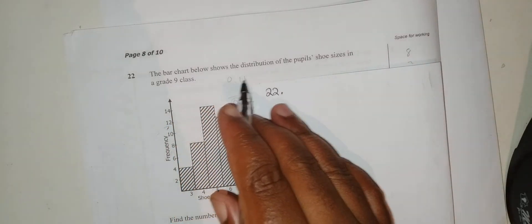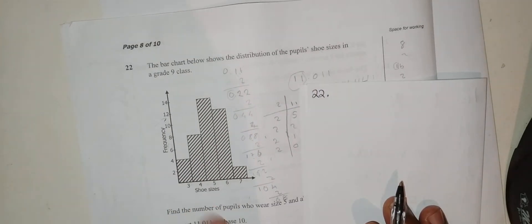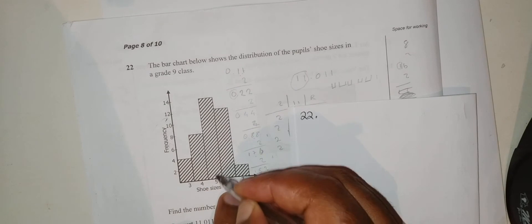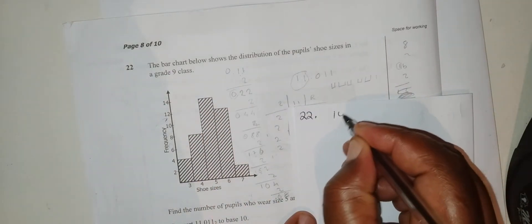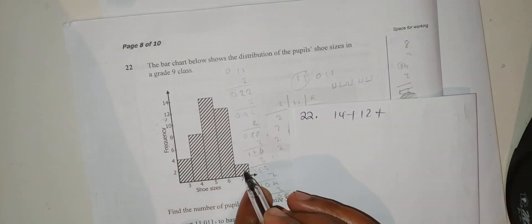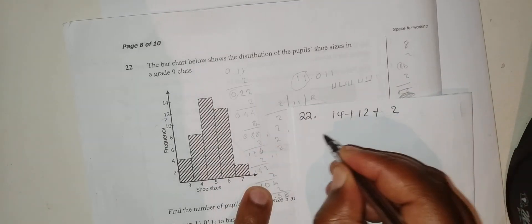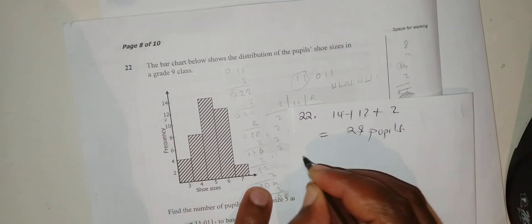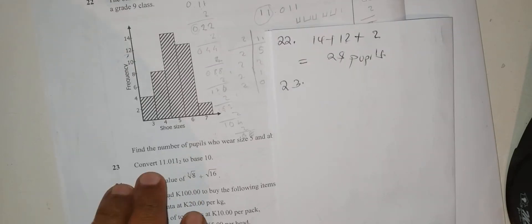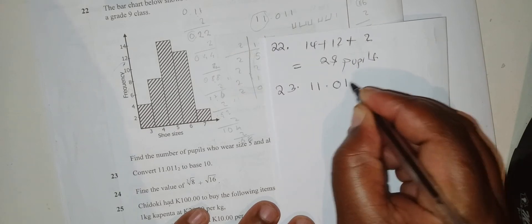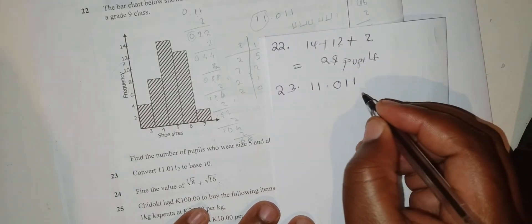Question 22: The bar chart below shows the distribution of pupils' shoe sizes in a grade 9 class. Find the number of pupils who wear size 5 and above. Those that wear size 5 are 14, plus those that wear size 6 are 12, plus those that wear size 7 are 2. 14 plus 14 is 28 pupils.